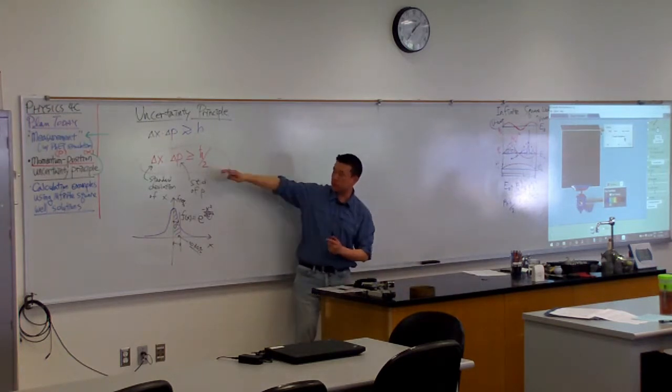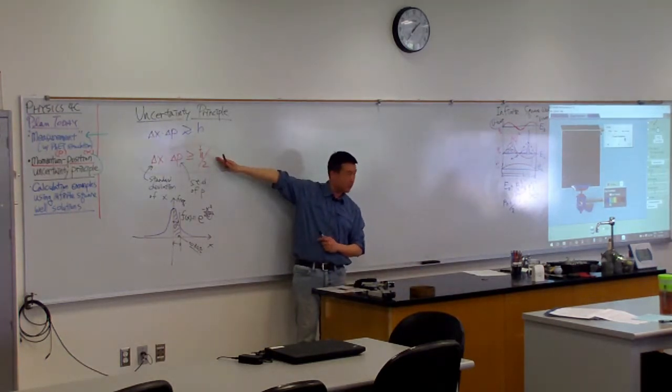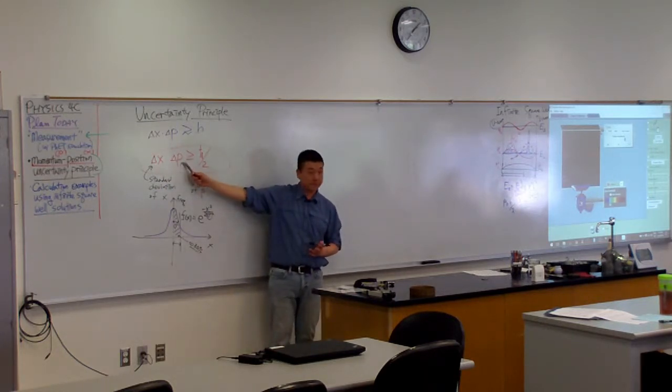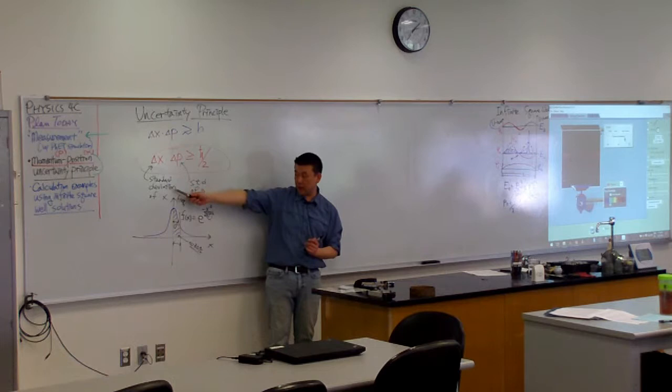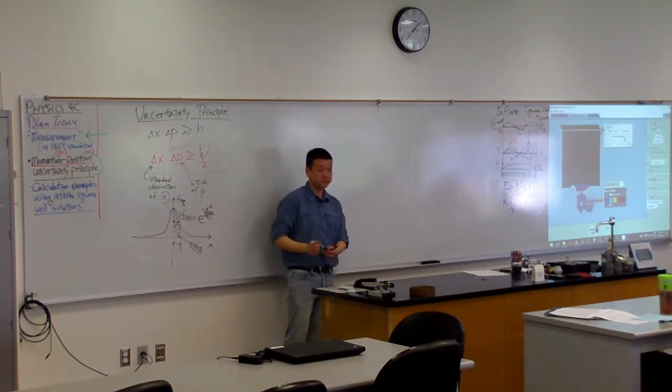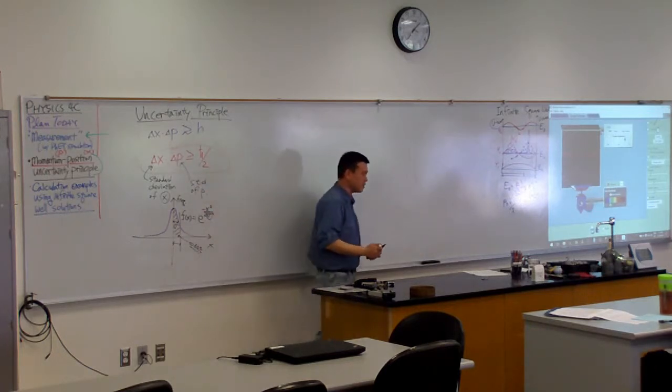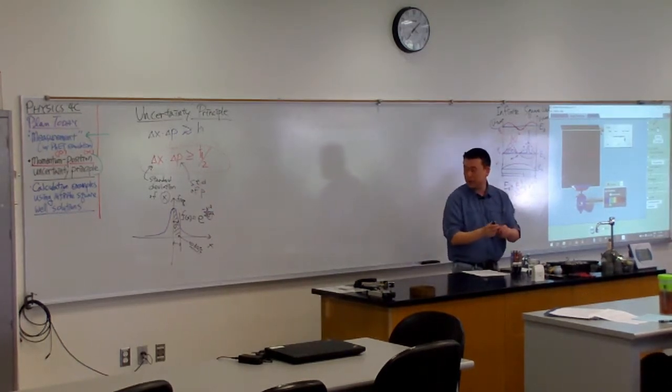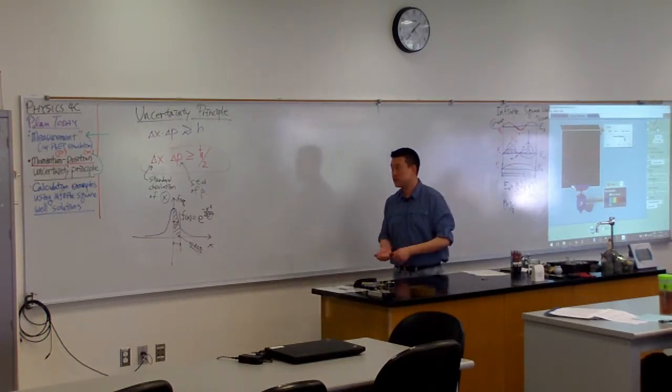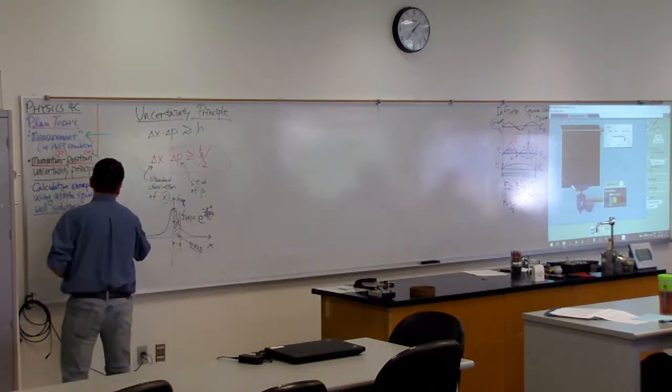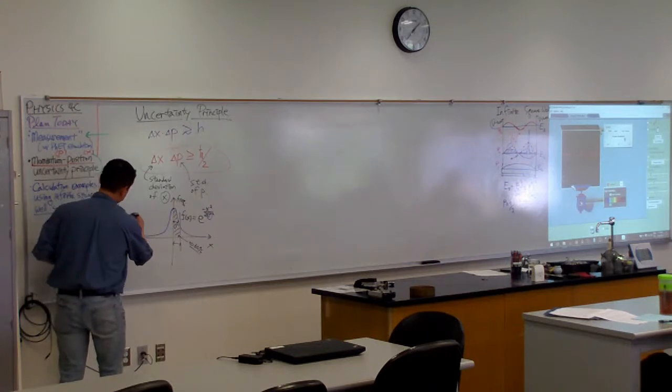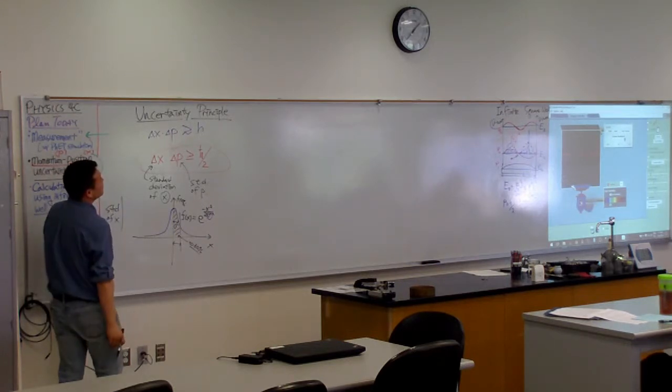So when we want to give this precise statement, there is a precise mathematical definition for delta x and delta p. It's the standard deviation of the distribution of the quantity that we are trying to measure. Yeah, so I'll leave it there in upper division. They do more, there's some algebraic manipulation you can do. I guess maybe I should give you the definition of standard deviation.